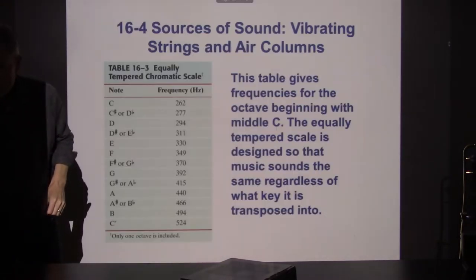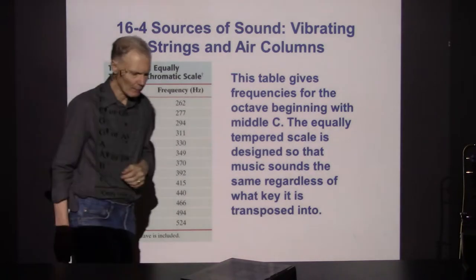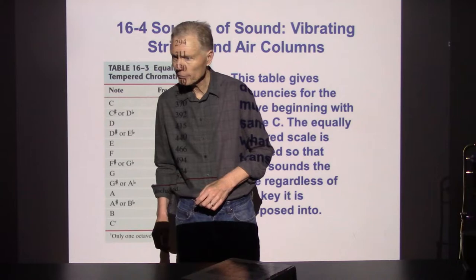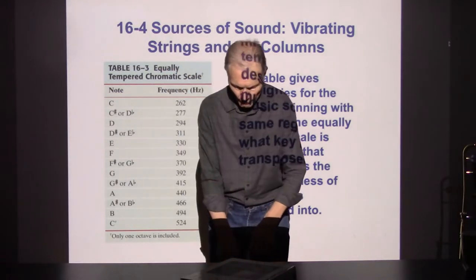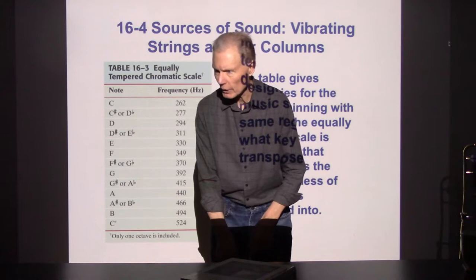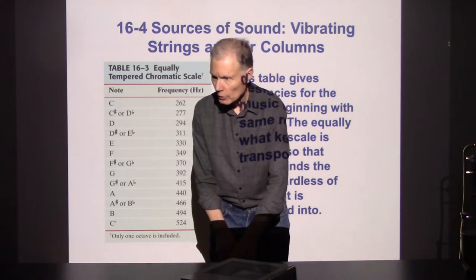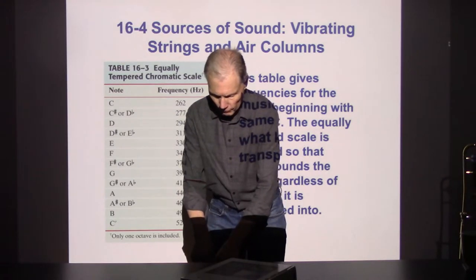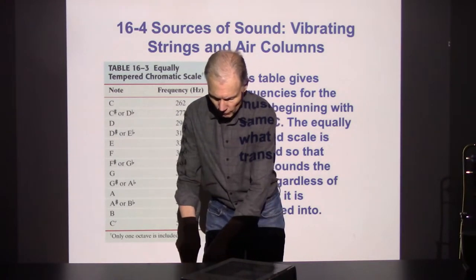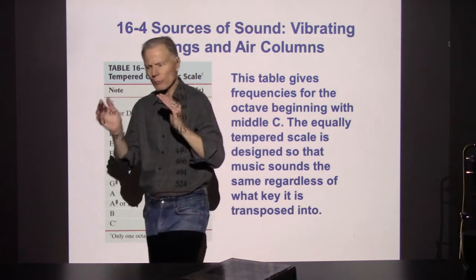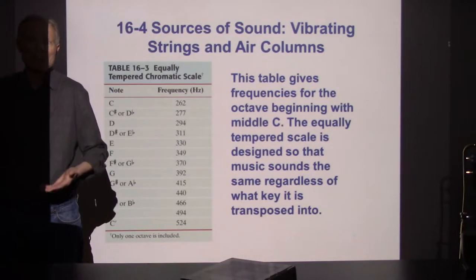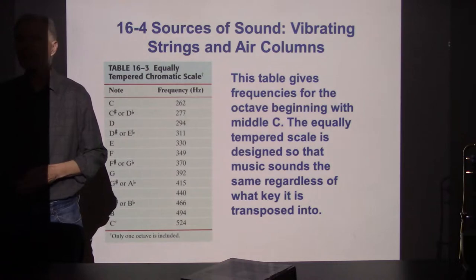Here are a couple of different examples. The textbook's example was starting at middle C — that's 262, 277. When it's the same ratio of frequencies from one note to the next, it creates, subjectively, the experience of notes being evenly spaced.